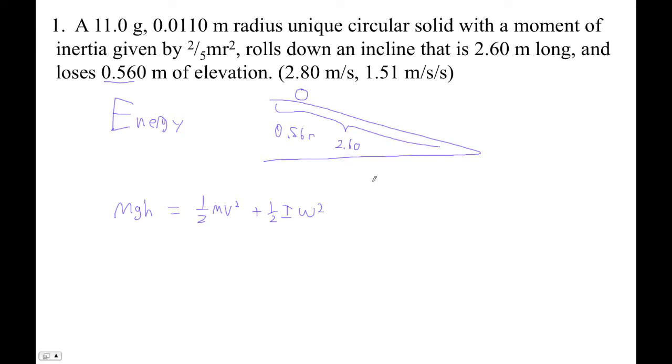And now we do the standard substitution. We're going to make everything linear. So that equals 1/2mv² plus 1/2 times 2/5mr². And then our omega is just v divided by r, so linear velocity over r squared.